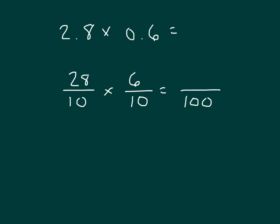All we need to do is multiply those numerators together. That's 28 times 6. 8, regroup the 4. 6 times 2 is 12, plus 4 is 16. So we have 168. That was that product of 28 times 6.